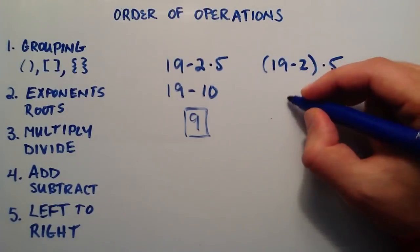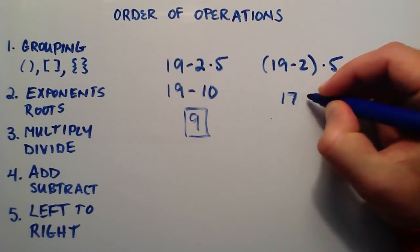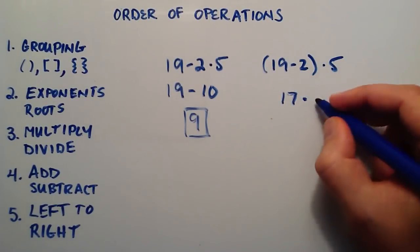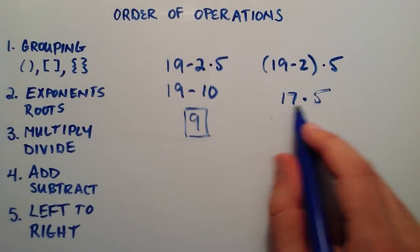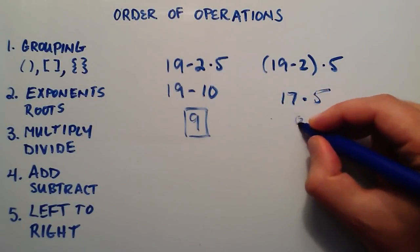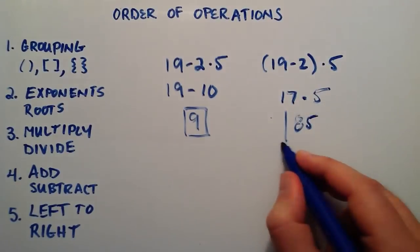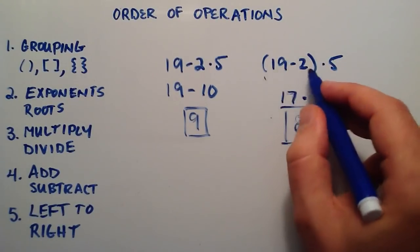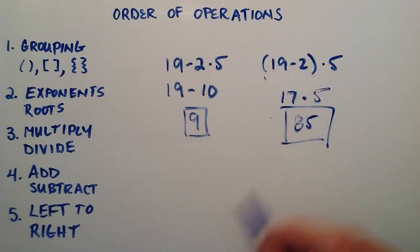19 minus 2 gives us 17, and then we multiply that result times the 5. And if you were to work this out, 17 times 5 is equal to 85. So as you can see here, the parentheses play a really important role in how this type of expression is solved.